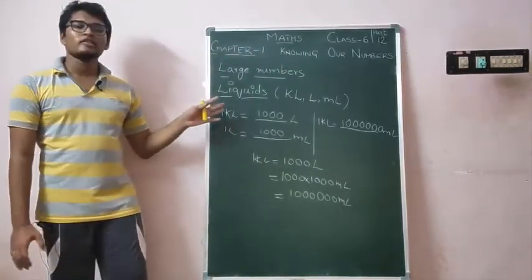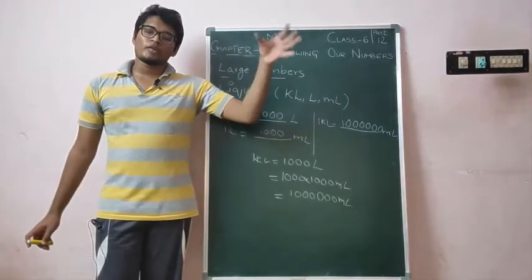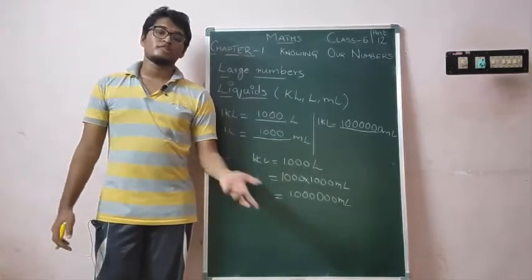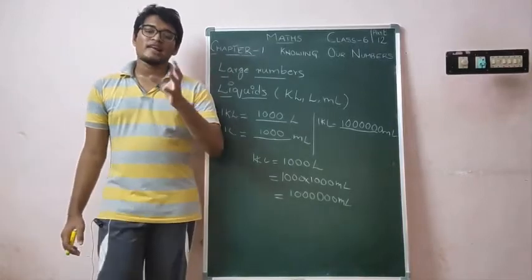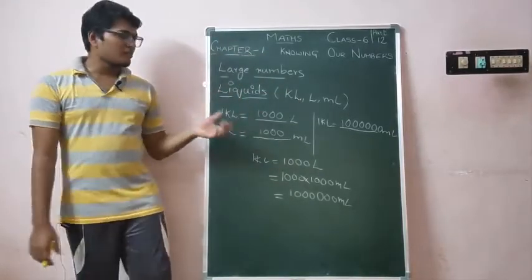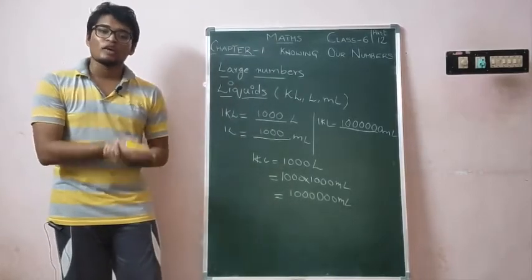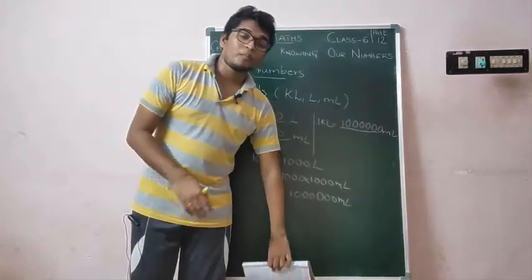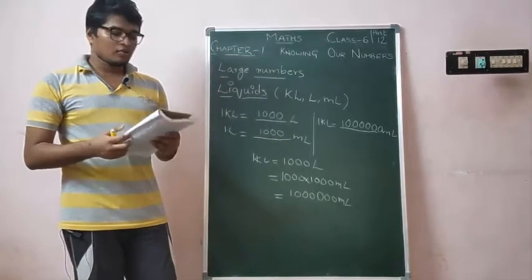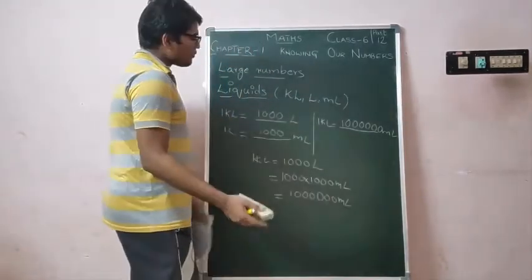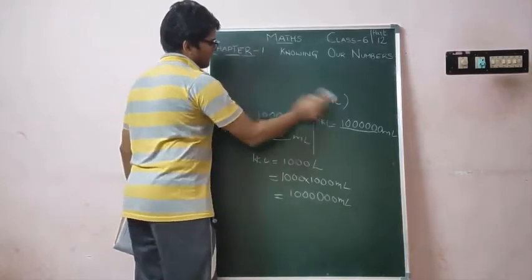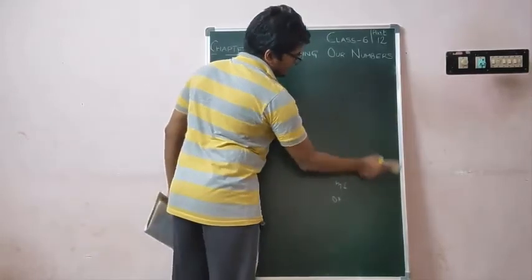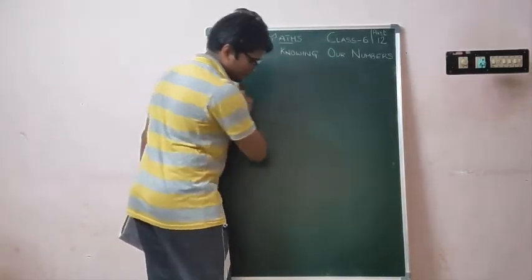So we have seen everything that we need to know about the numbers. From first class we have seen so many numbers, which is the greatest number, which is the smallest number. We have seen crores, lakhs, and millions, billions. We also have seen measurements. Now there is a very important topic or very important exercise we are going to do now.